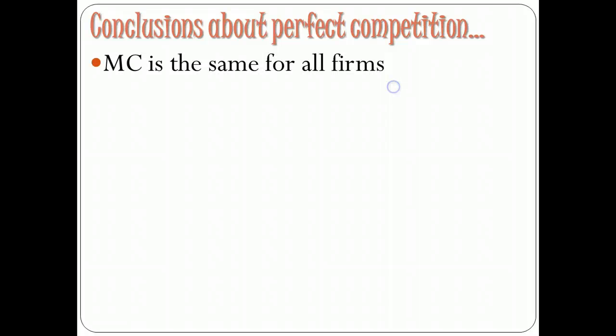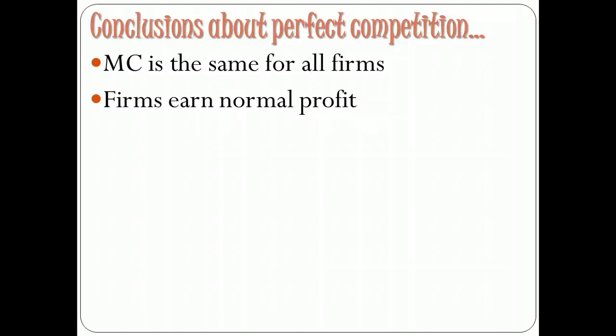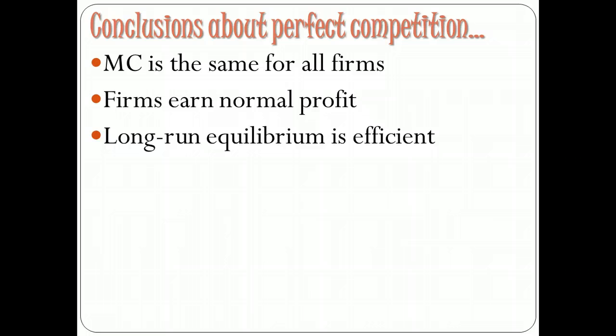So what are some conclusions we can make about perfect competition? In a constant-cost industry — which is what you'll see mostly in problems — every firm faces the same cost structure, so marginal cost will be the same for everyone. We know that firms will earn normal profit in the long run: if there is positive economic profit in the short run, firms will enter and drive profits down to normal; if there is an economic loss, firms will leave, bringing price up until normal profit is restored. We also know that long-run equilibrium is efficient — there is no way to make yourself better off without making somebody else worse off. That's perfect competition. We'll do some practice in class and then move on to monopoly in the next couple of days.